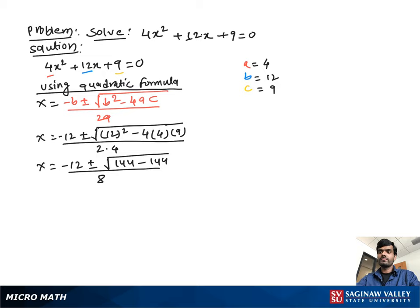Then, x equal to negative 12 plus minus, 144 minus 144 is equal to 0, over 8.